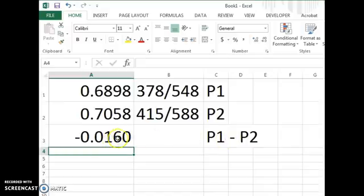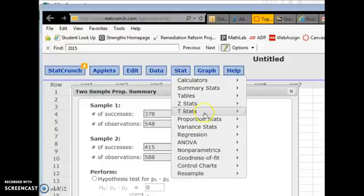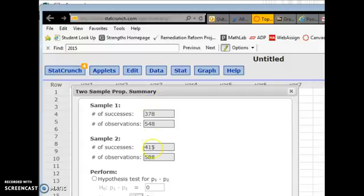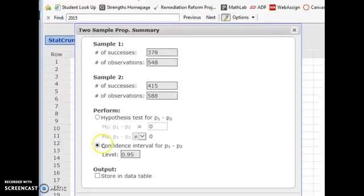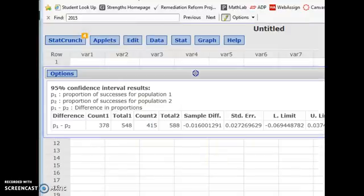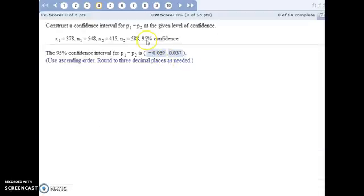To quickly construct a confidence interval around the estimate, I'm going to use StatCrunch again. Proportion stats, two samples with summary, enter in the information from the problem and then this time we're using confidence intervals, 95%. Hit Compute and StatCrunch will give you the lower limit and upper limit of your confidence interval. So we are 95% confident that the difference between our population proportions is somewhere in that interval.